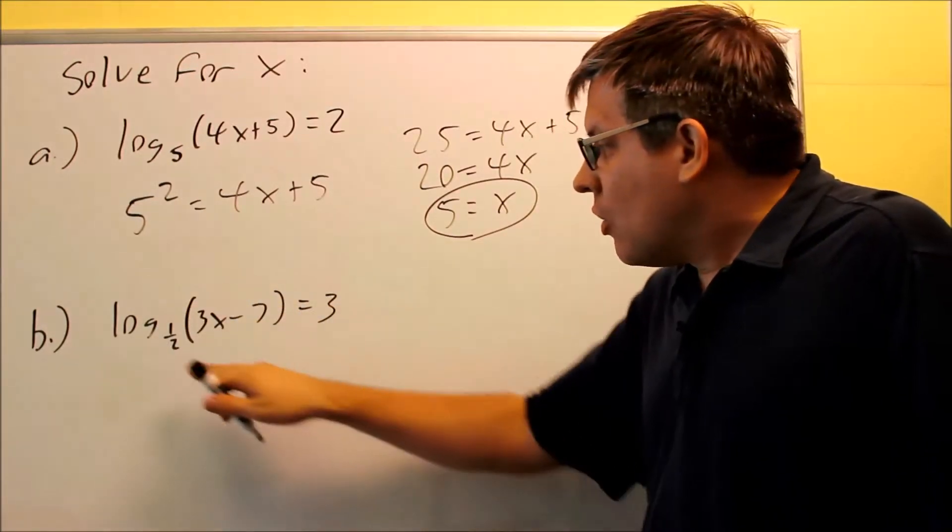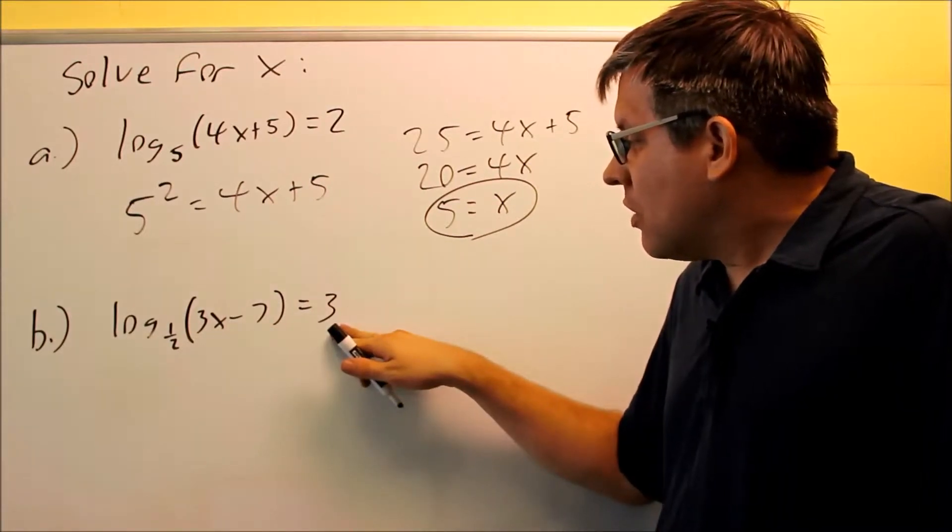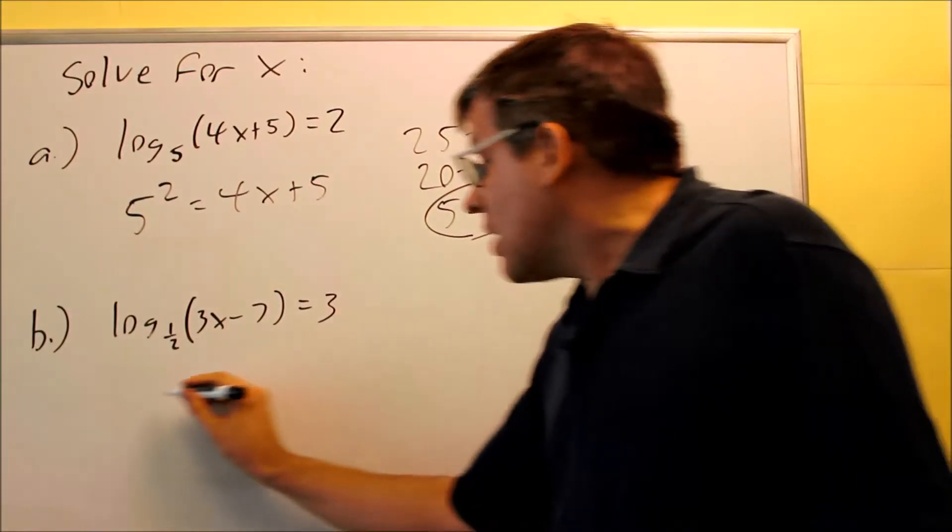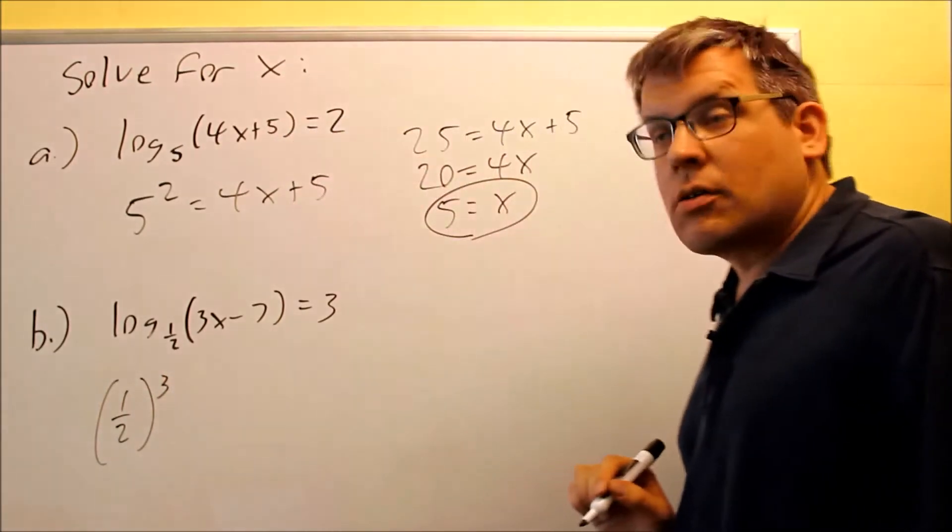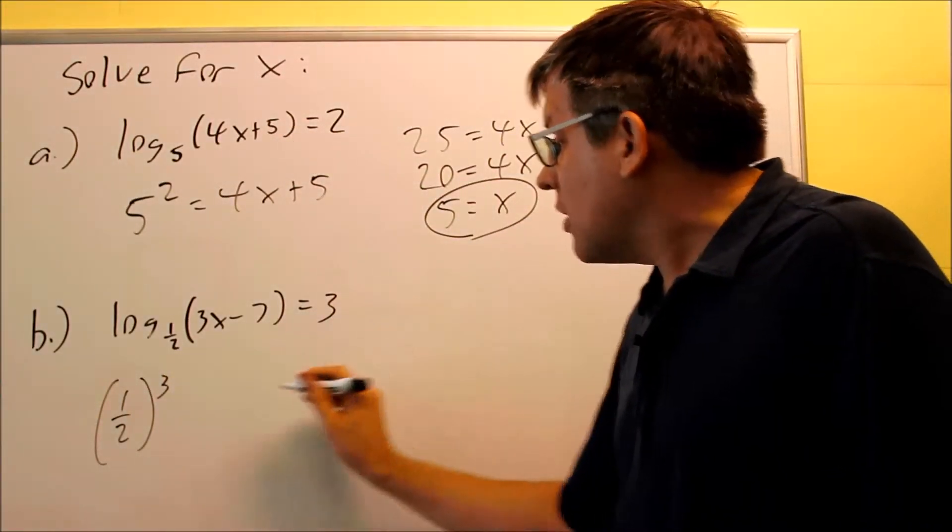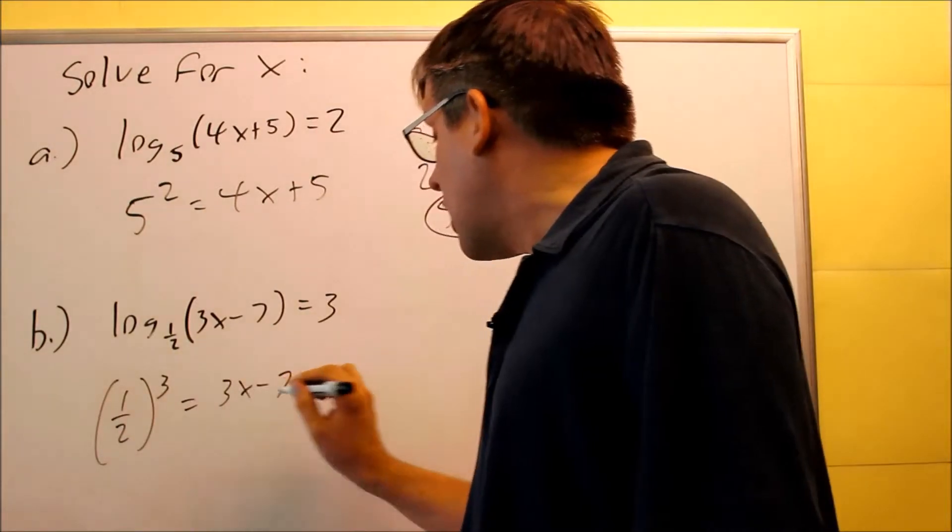Let's do this one the same way. We're going to change this into exponential form. You take the base, one half, raise it to the third power, number after the equal sign, that's going to equal 3x minus 7.